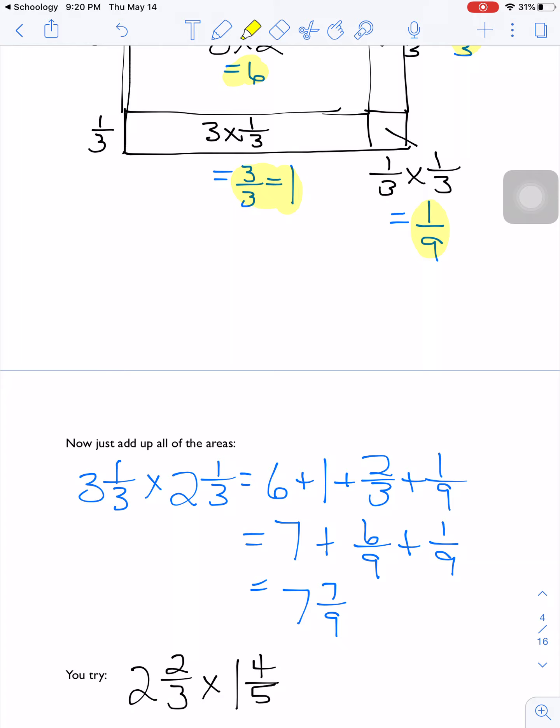The whole numbers can be added really easily. We've got 7 wholes, and then the fractions, we have to find the common denominator for adding fractions. That would be 9. So we have 6/9 plus 1/9, so my answer ends up being 7 and 7/9.